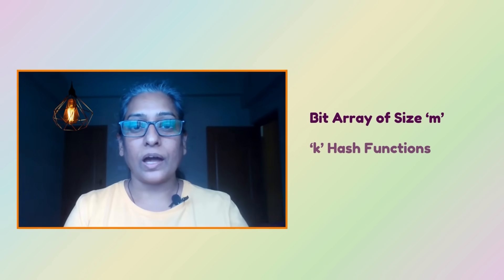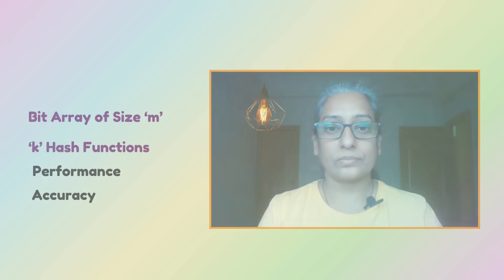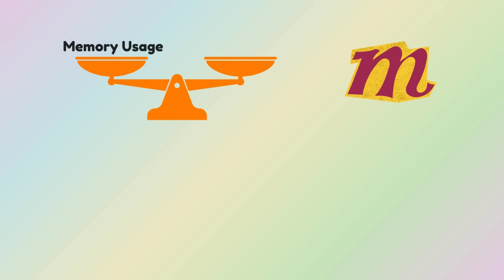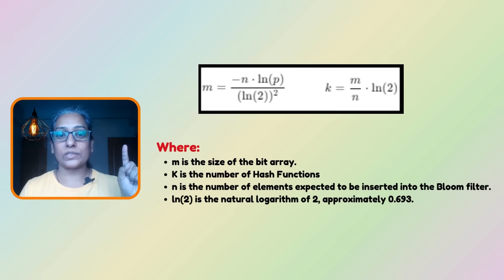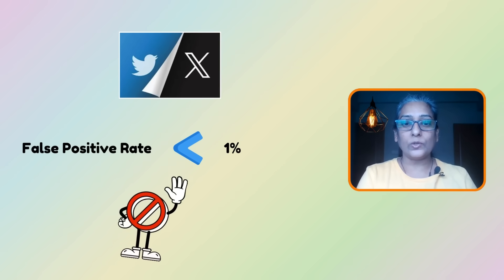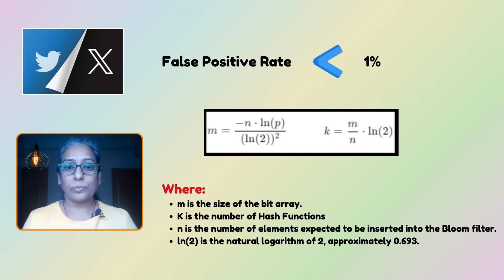When a new user tries to register, their email is hashed with the same k functions. If all corresponding positions in the bit array are 1, the email might be in use — though a false positive is possible. If even one bit is 0, the email is definitely not in use. The values of M and K are critical for the performance and accuracy of a Bloom filter, determined based on the expected number of elements N and the desired false positive probability P. M is calculated to balance memory usage with the acceptable false positive rate, and K is chosen to minimize false positives while maintaining efficient performance.